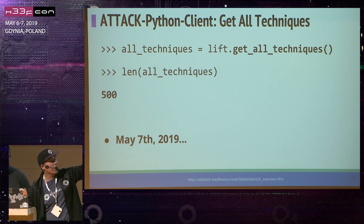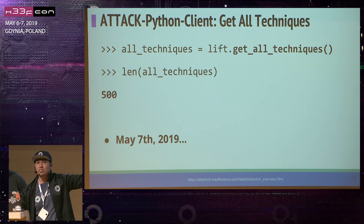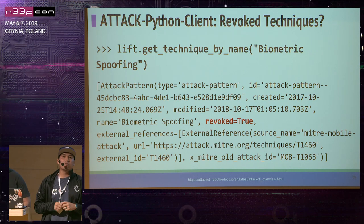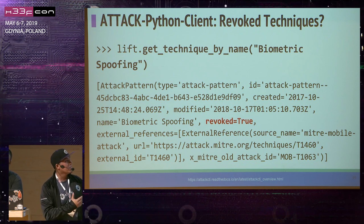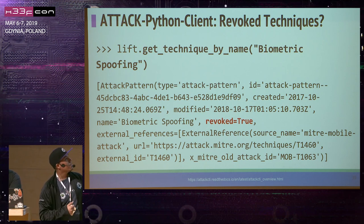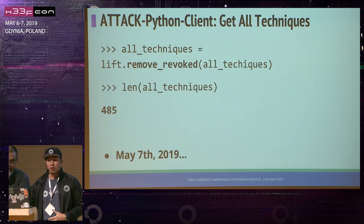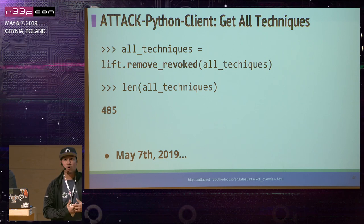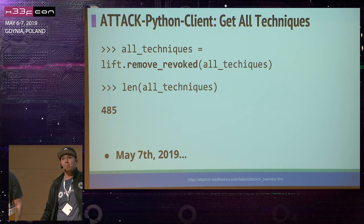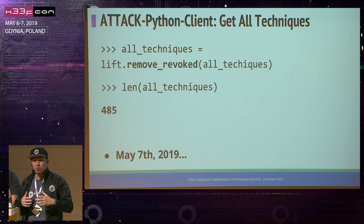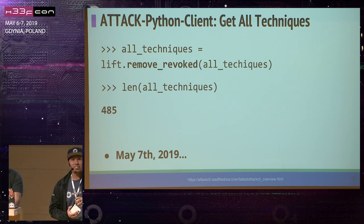Keep in mind there are 500 techniques across all the matrices in MITRE ATT&CK. There's also the concept of revoked techniques — MITRE ATT&CK saves techniques that have been disabled or revoked, so if you work with ATT&CK data through their APIs you need to filter those out. There's a method called remove_revoked that gives you all the currently available techniques in the framework so you can start understanding the data sources behind each technique.